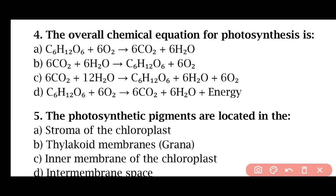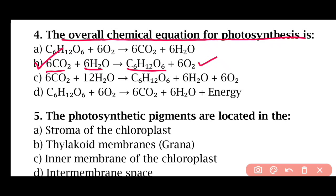Question 4: What is the overall chemical equation for photosynthesis? The correct answer is option B. Six carbon dioxide molecules combine with six water molecules to produce a glucose molecule, and oxygen molecules are released.